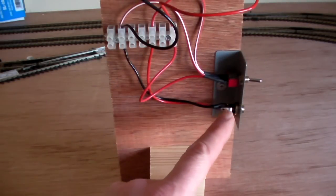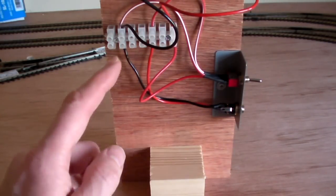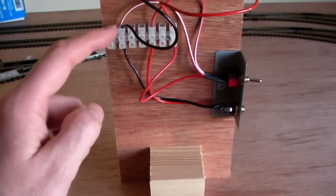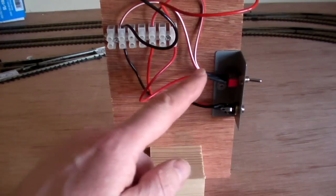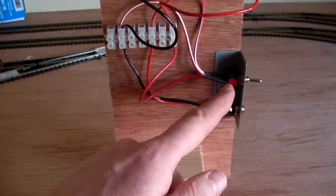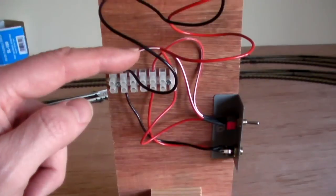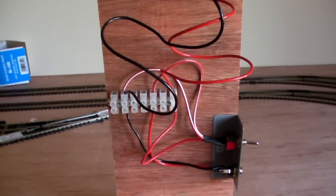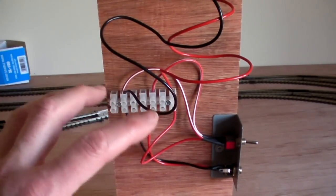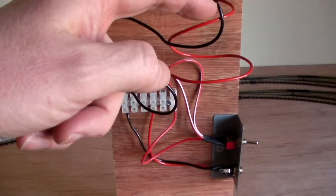Looking at it in detail, we've got positive and negative supply through this socket into these blocks here, and then each of those positive and negative supply runs to the switch, with the negative also being a common return to all the point motor areas. This area down here will be a switching area, and these two wires are the wires that go off to the point motor area.